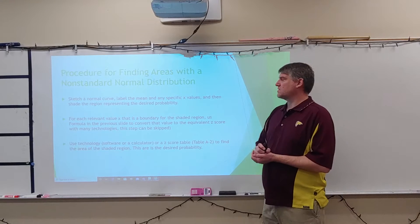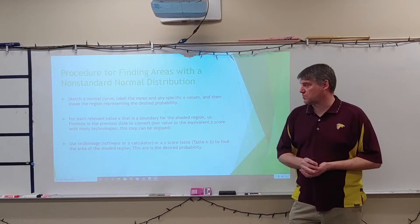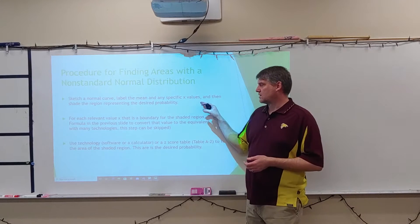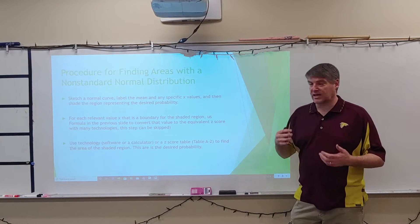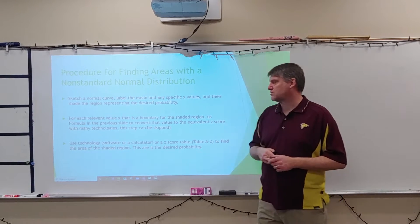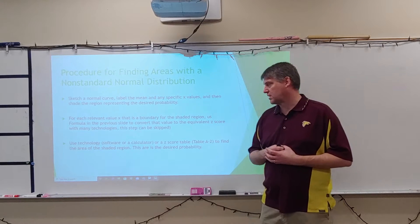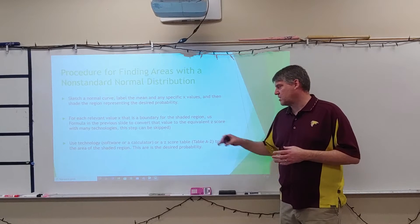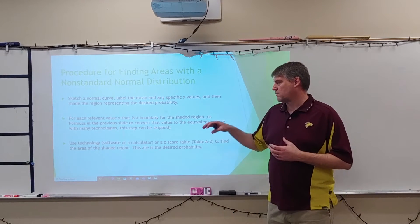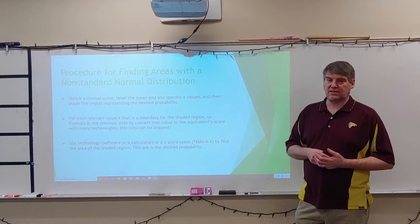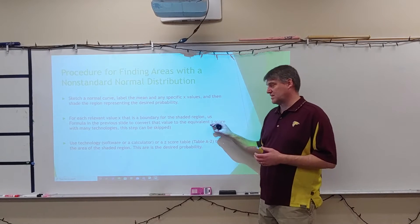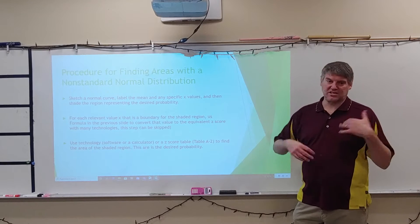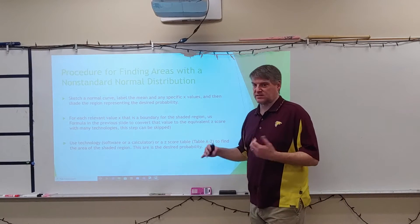Procedure for finding areas with a non-standard normal distribution: sketch a normal curve, label the mean and any specific x values, and shade the region representing the desired probability. For each relevant x that is a boundary for the shaded region, use the formula to convert that value to an equivalent z-score. With many technologies like Excel, you can often skip this step — it will do it for you.